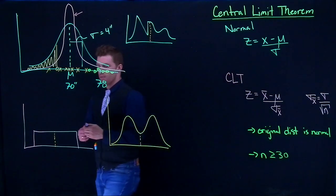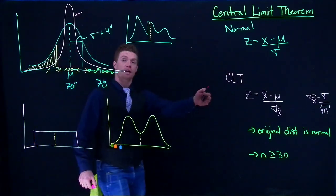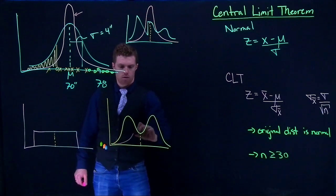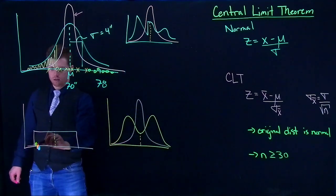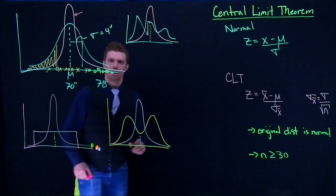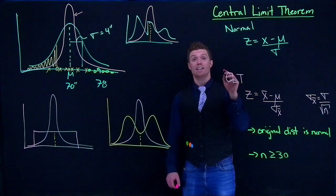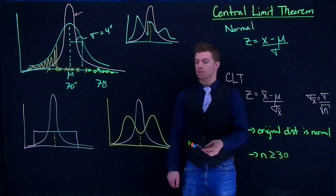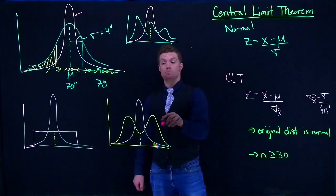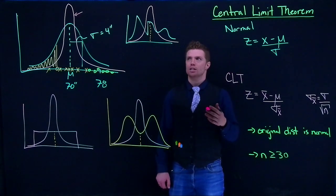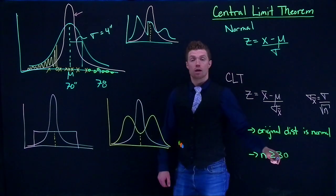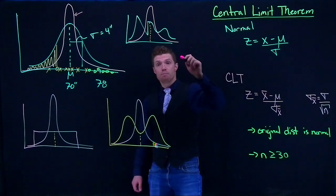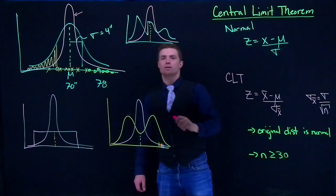The central limit theorem makes it like this. And this is really handy because sometimes when we're gathering data, we might not know what the original distribution is. But if we can get a sample size big enough, it doesn't matter what the original distribution actually was. As long as our sample size is big enough, and we know what the means and the standard deviations are, we can model this sampling distribution as a normal distribution.